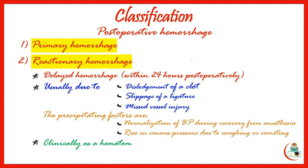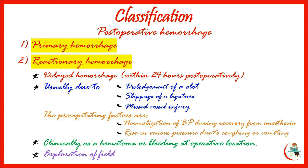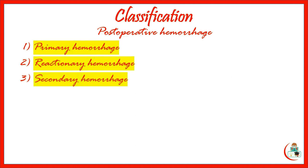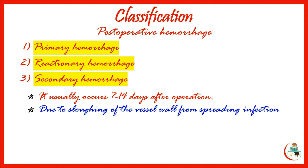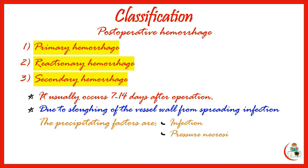Reactionary hemorrhage clinically presents as a hematoma or bleeding at the operative site, and necessitates exploration of the operative field and control of the bleeder. Secondary hemorrhage usually occurs within 7 to 14 days after the operation, though the time may be longer or shorter. It is due to sloughing of the vessel wall from spreading infection. Precipitating factors include infection, pressure necrosis such as caused by a drain, and malignancy.